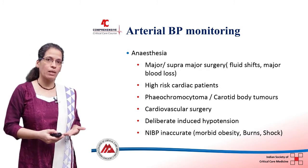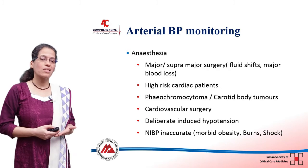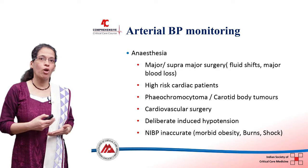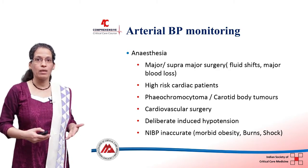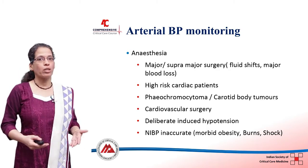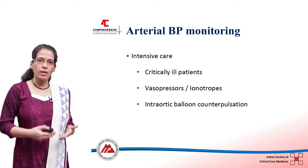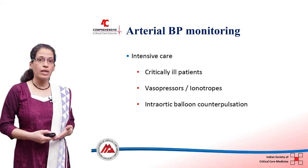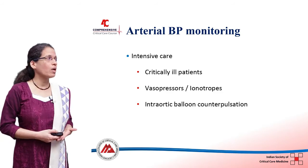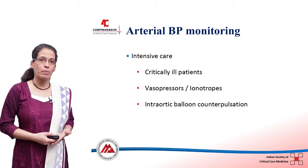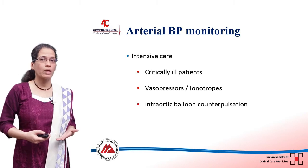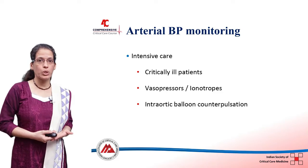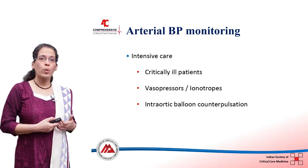We use it in cases where we want deliberate induced hypotension — where we want to keep the blood pressure slightly low. In all those cases where non-invasive blood pressure monitoring may not be accurate — such as very obese patients where you may not get a properly sized cuff, patients with burns, or patients in shock. In intensive care, arterial blood pressure monitoring is a major modality of hemodynamic monitoring used in all critically ill patients — those on vasopressors, in shock, or in cardiothoracic ICUs where patients are on intra-aortic balloon counterpulsation, where arterial pressure monitoring is a must.